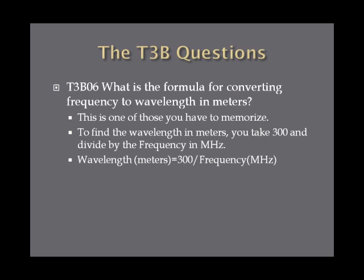What is the formula for converting frequency to wavelength in meters? To find wavelength in meters, you take 300 and divide by the frequency in megahertz. For instance, the amateur 10-meter band is roughly 28 megahertz. 300 divided by 28 is roughly 10, making it the 10-meter band. So remember: wavelength in meters equals 300 divided by frequency in megahertz.